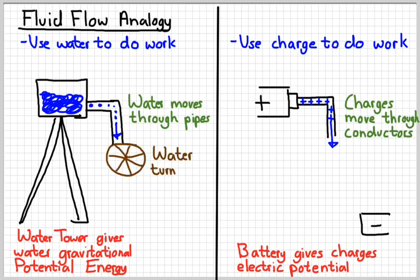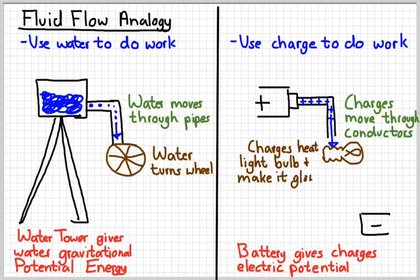So we could put something like a water wheel in the path of our moving water. And then the water would turn that wheel. The same way we can put a light bulb in the path of electric charges. And the light bulb will cause the filament to heat up, which would then make it glow. There's other devices we could put here instead of a light bulb, like a motor. And we'll talk about those things later on down the road.